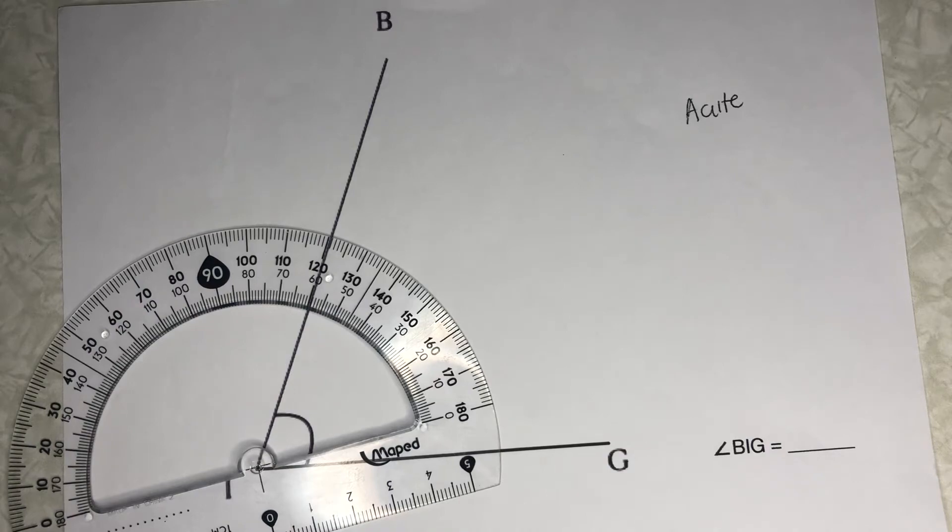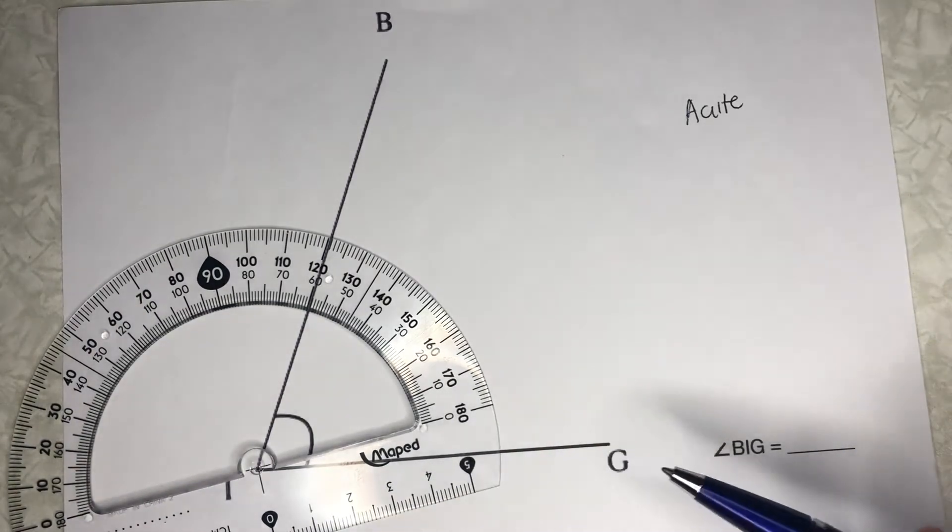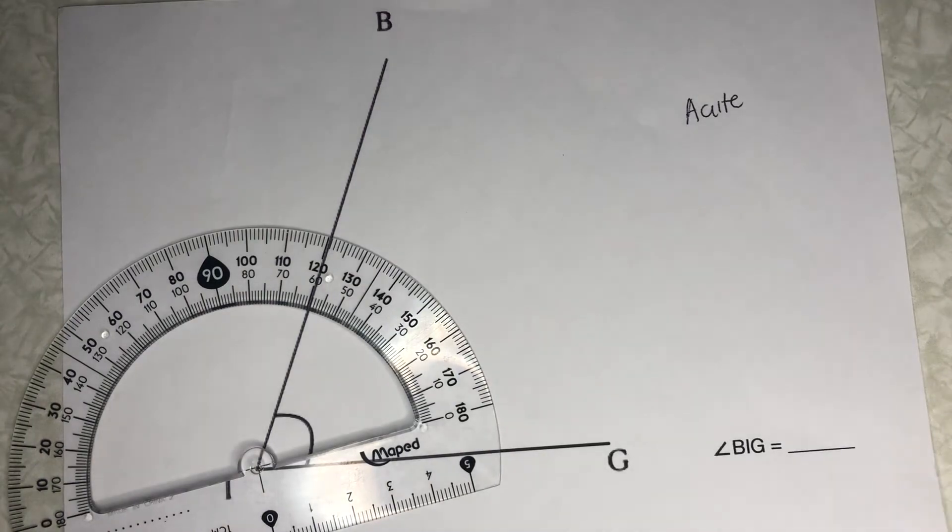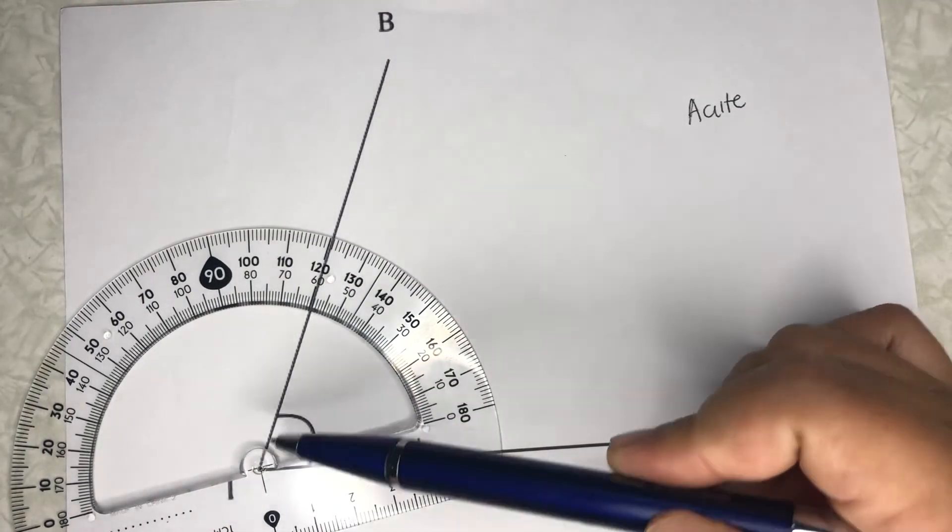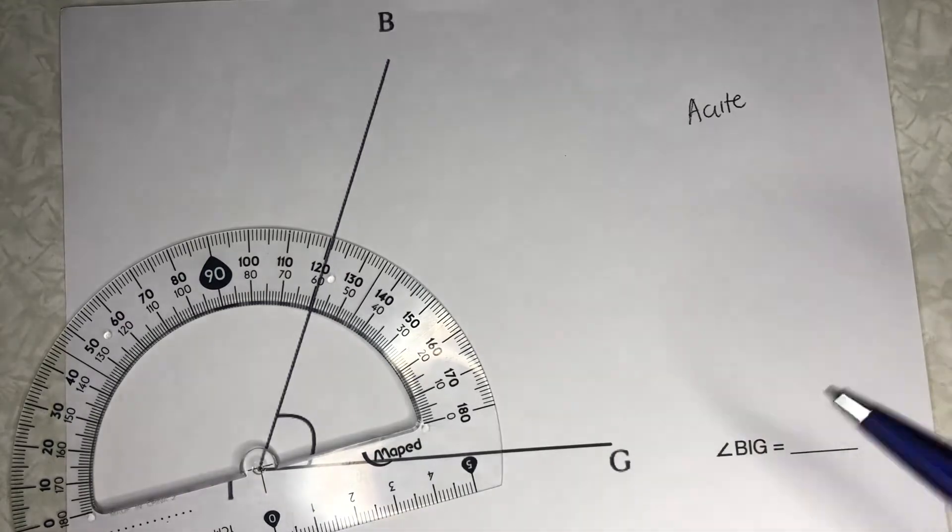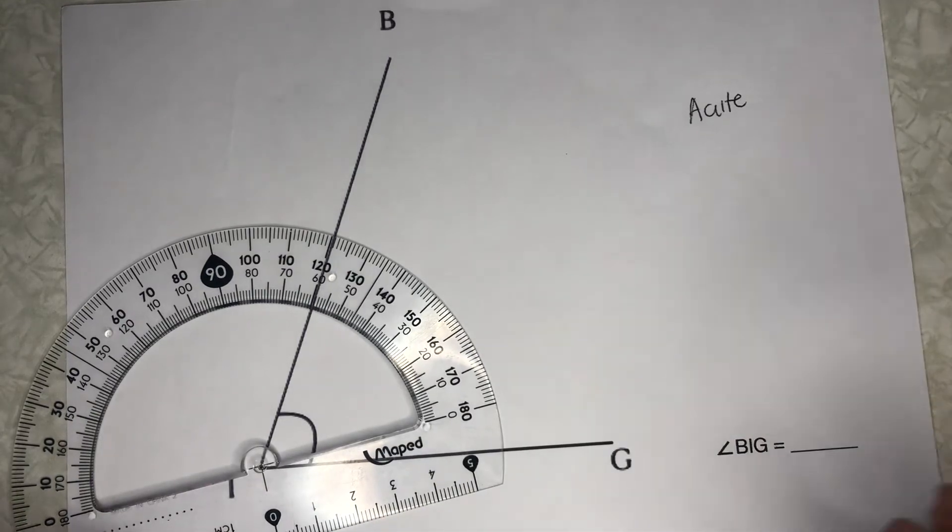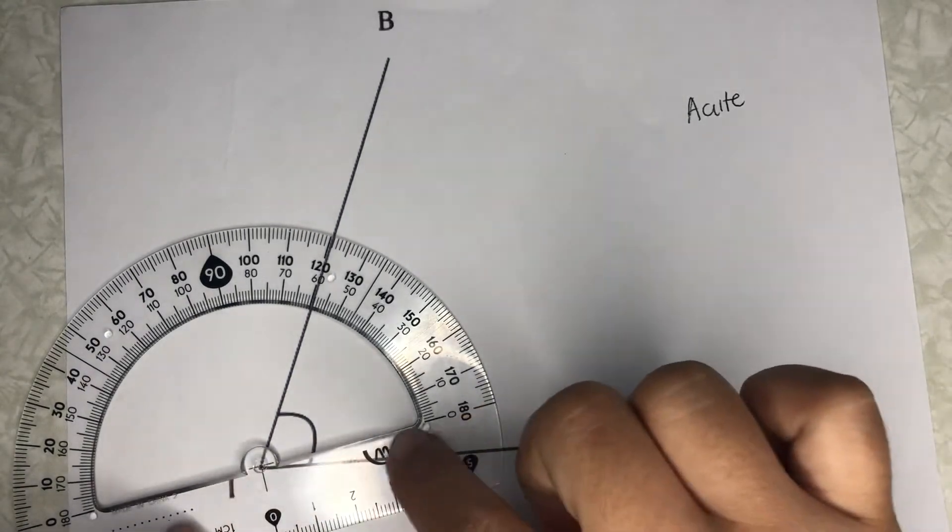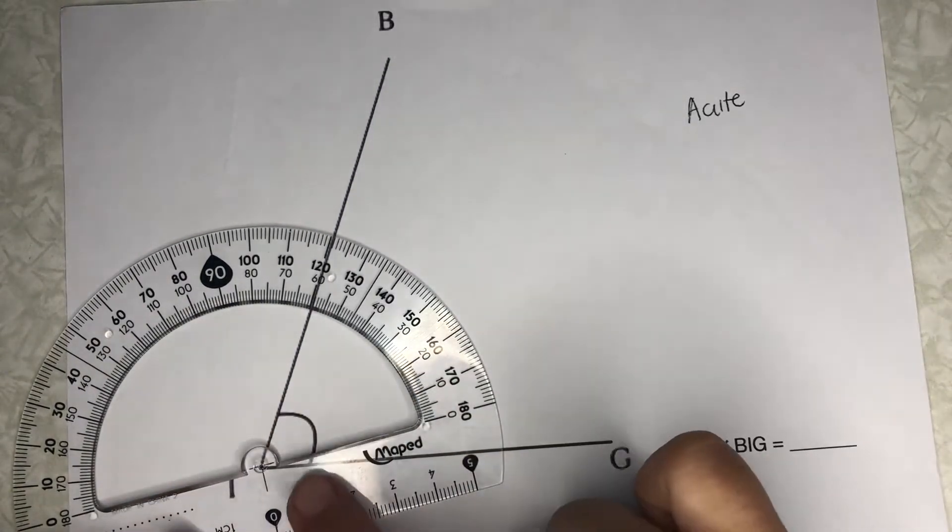The next step is to align the baseline with any leg of the angle. You can either align it to leg BI or to leg IG. For now, I'm going to align it to leg IG, so baseline with leg IG.